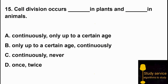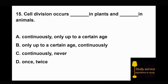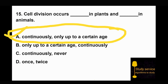Question 15: Cell division occurs — dash in plants and dash in animals. Option A: continuously in plants and only up to a certain age in animals. Option B: only up to a certain age in plants and continuously in animals. Option C: continuously in plants and never in animals. Option D: once in a lifetime in plants and twice in animals. Option A is the right answer — cell division occurs continuously in plants and only up to a certain age in animals.